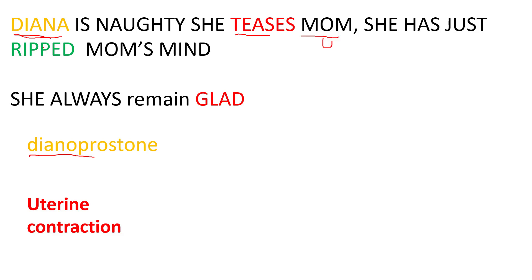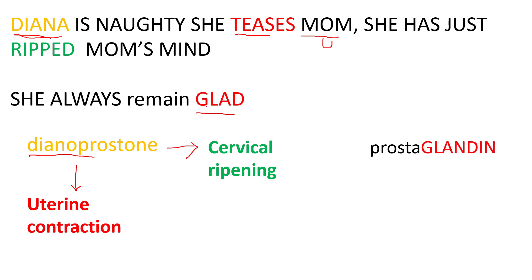She has deprived mom's mind — 'deprived' means cervical ripening. So Dinoprostone causes uterine contraction as well as cervical ripening. She always remains glad — 'glad' means it is a prostaglandin. So Dinoprostone is a prostaglandin.